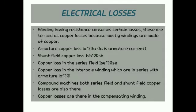Copper loss in the series field is Ise² × Rse. Copper loss in the interpole winding, which is in series with armature, is Ia² × Ri. In compound machines, both series field and shunt field copper losses are also present. Copper losses are also there in the compensating winding.